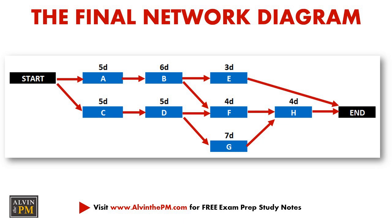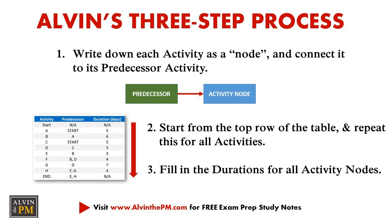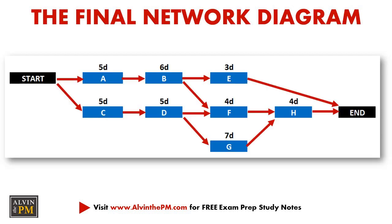Make sure you use my three-step process to help simplify things when you encounter these types of questions on your exam. First, start out by writing down each activity as a node or a box, and identify and connect it to activities which occur before it — what's known as the predecessor activity. Rinse and repeat this for all of the other activities. And lastly, fill in the durations for all of the nodes. With that completed, you'll have a final network diagram.